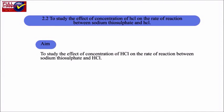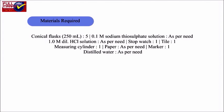Experiment 2.2: To study the effect of concentration of HCl on the rate of reaction between sodium thiosulphate and HCl. Materials required: 5 conical flasks of 250 ml, 0.1 M sodium thiosulphate solution, 1.0 M dilute HCl solution, stopwatch, a tile, measuring cylinder, paper, marker, and distilled water.